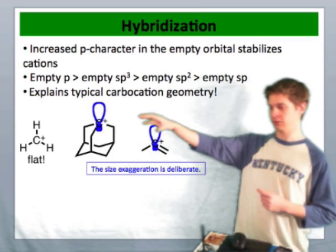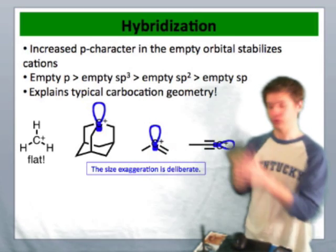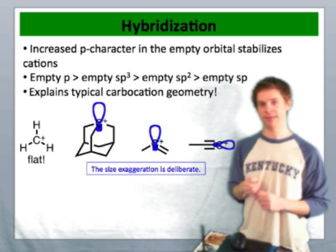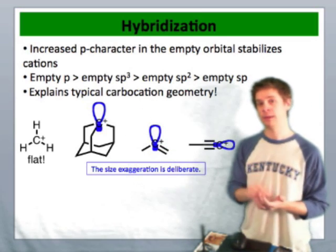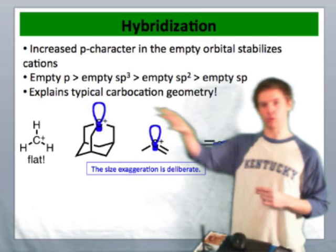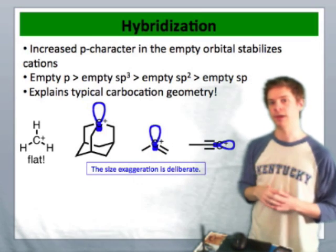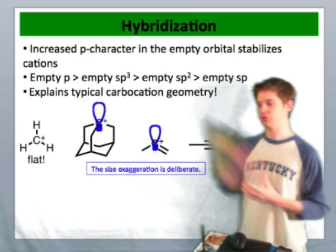It has to be sort of bent out. This geometric constraint forces the empty orbital of that cation to be an sp3 hybridized orbital because the other three orbitals forming bonds to the rest of the molecule must be sp3 in order to exist in this geometry.